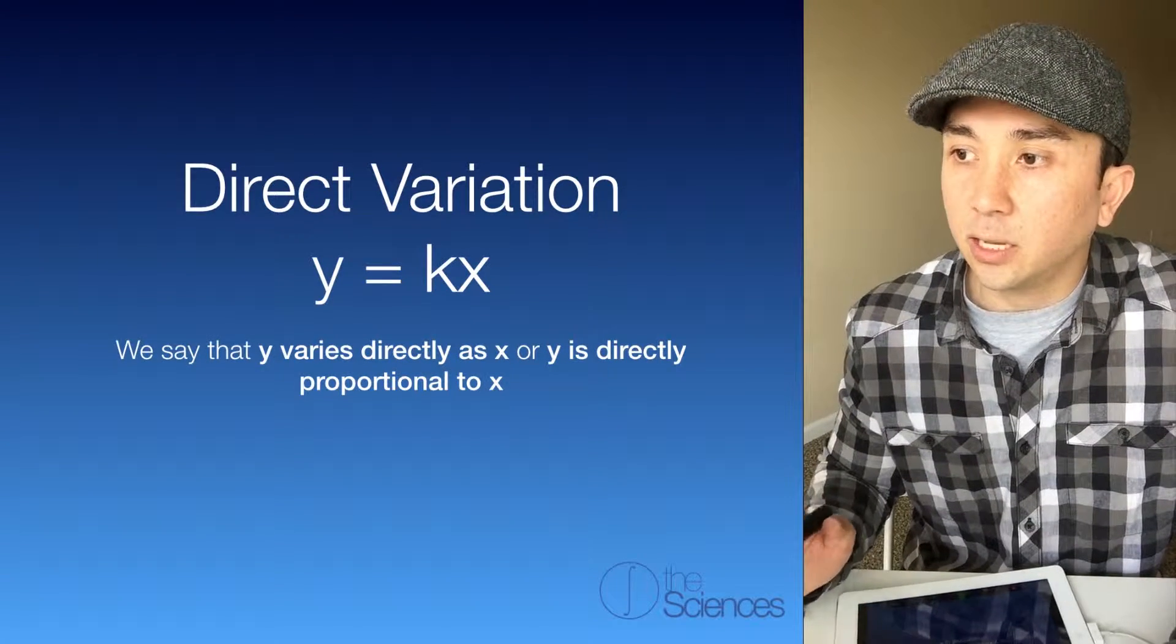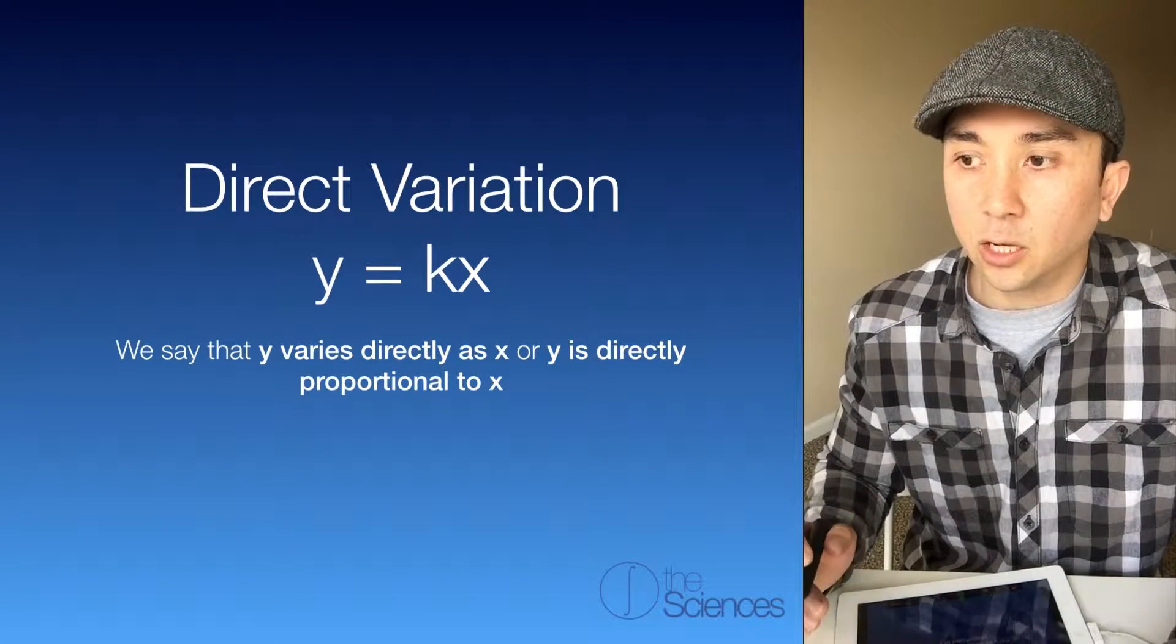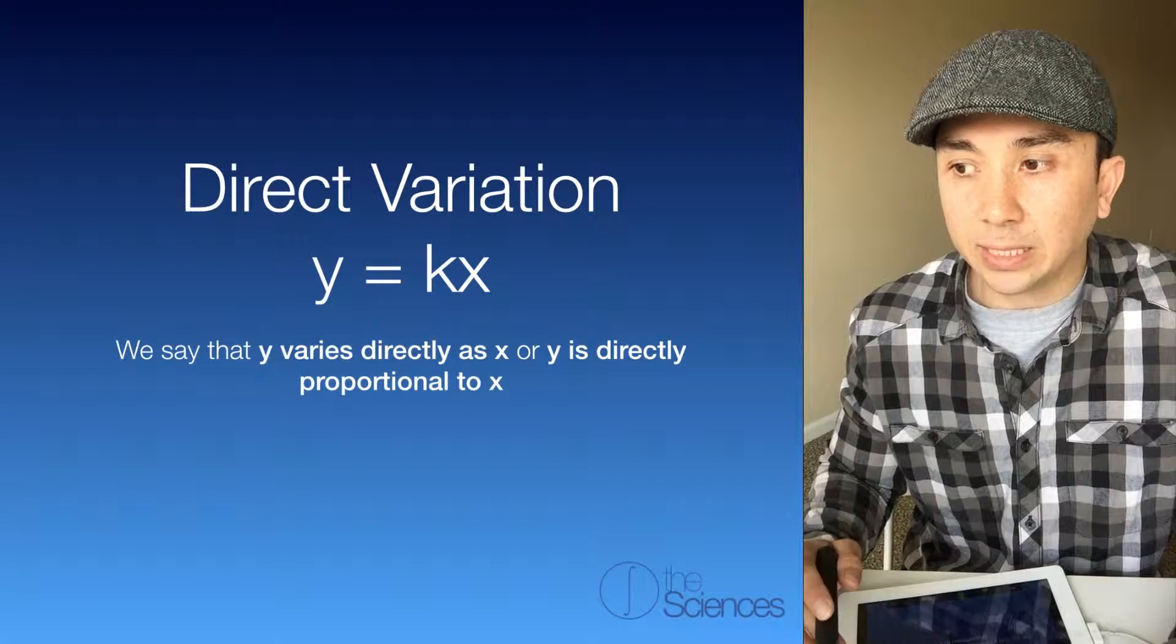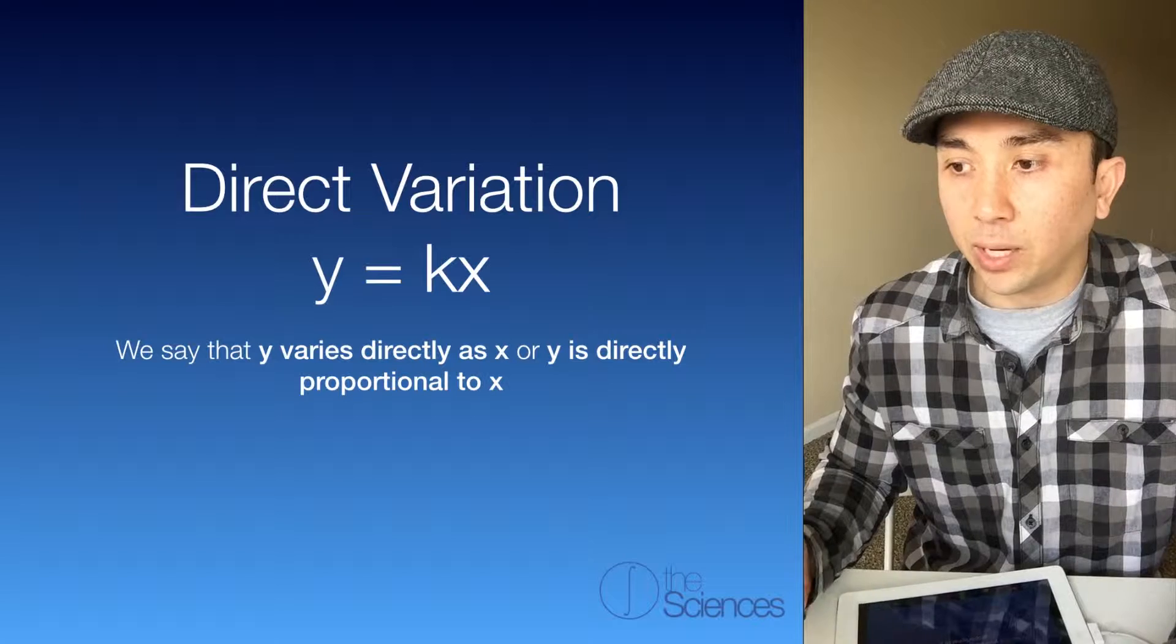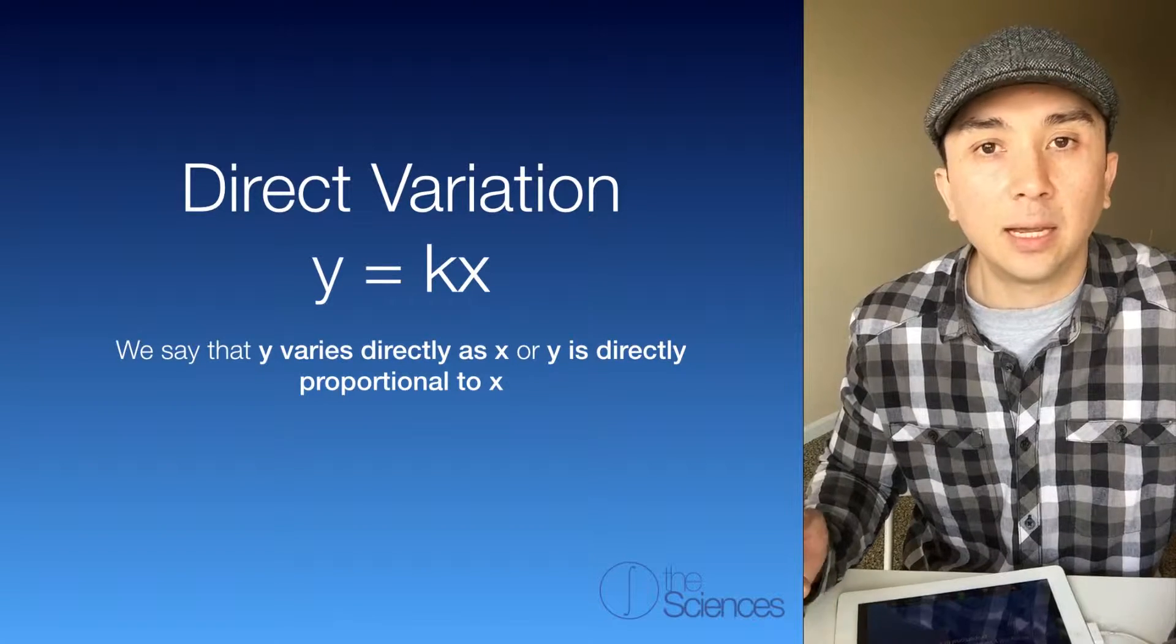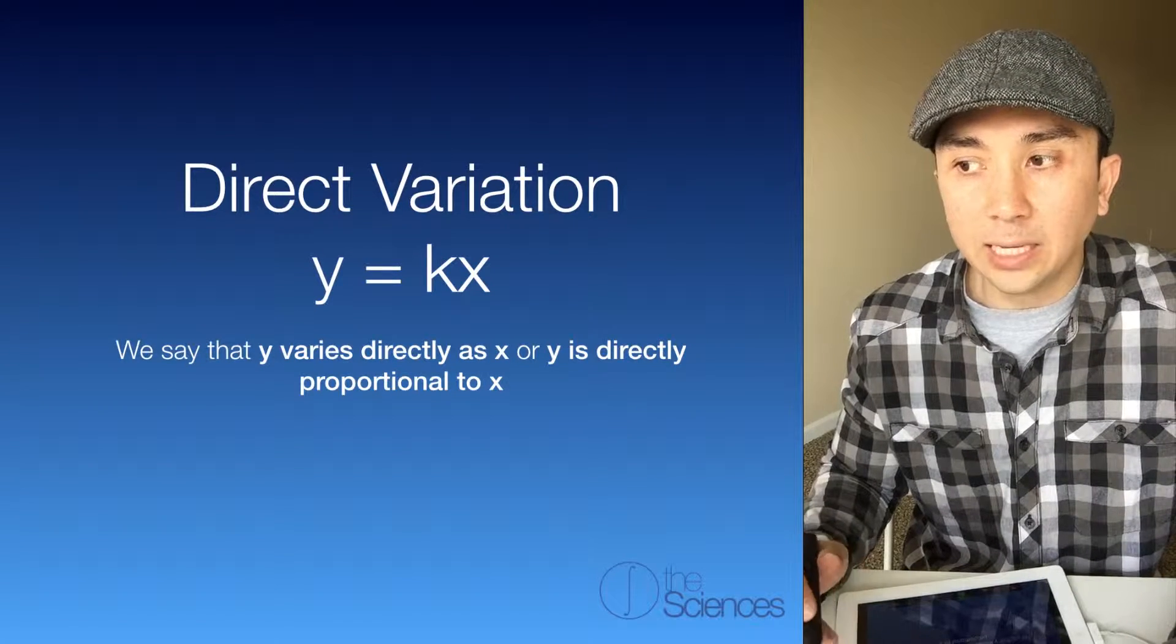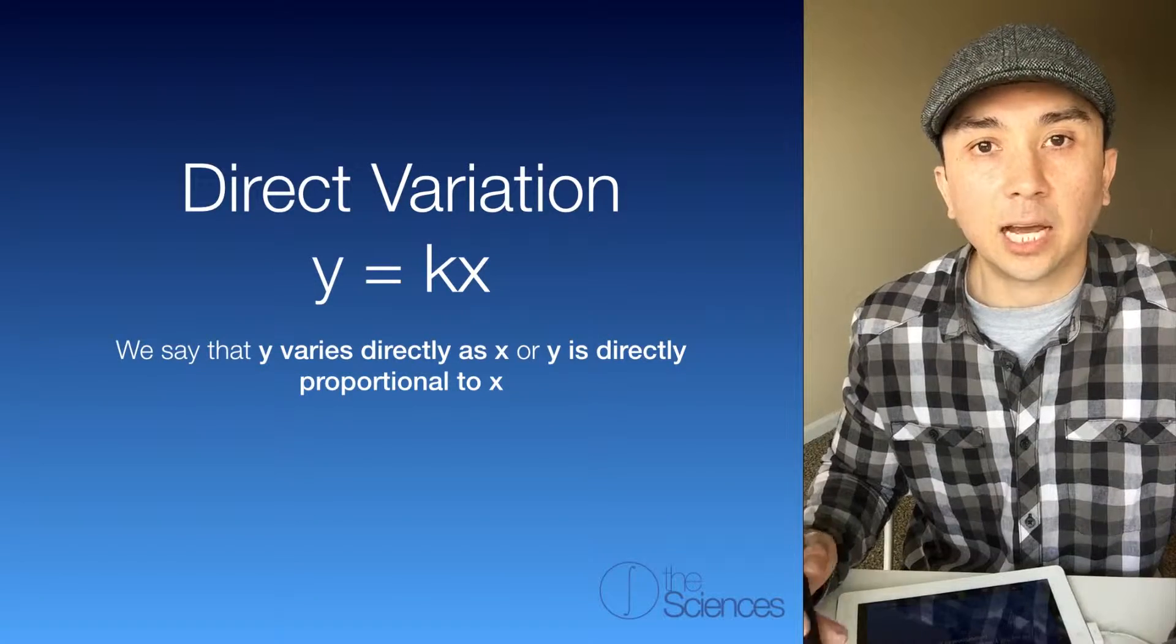Here's direct variation. We say that y varies directly as x, or y is directly proportional to x. And it has the formula y equals k times x.